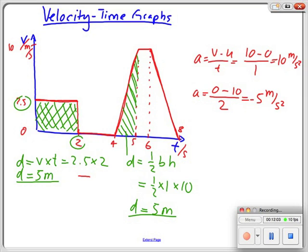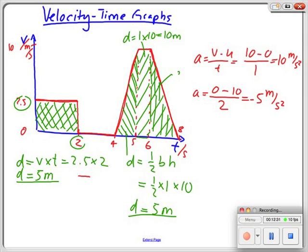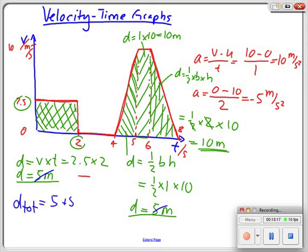What is the overall distance covered? In the constant-speed section — 1 second times 10 meters per second — the distance is 10 meters. In the deceleration section, it is again a triangle: one-half times base of 2 seconds times height of 10, which gives one-half times 2 times 10, so 10 meters covered in that last section. My total distance is 5 meters plus 10 meters plus another 10 meters, which makes 30 meters covered overall in this graph.